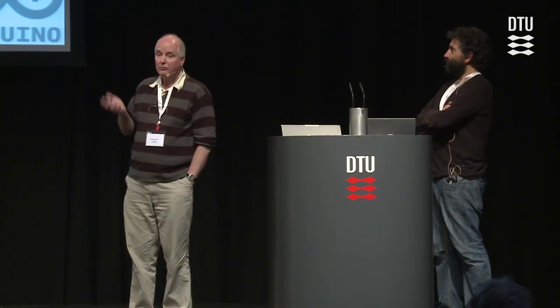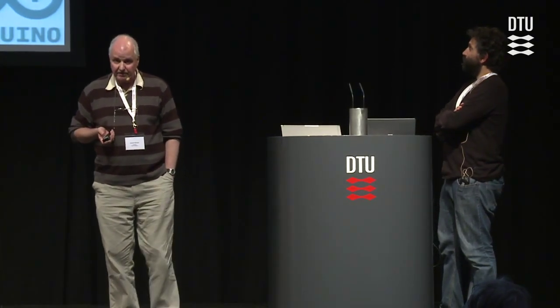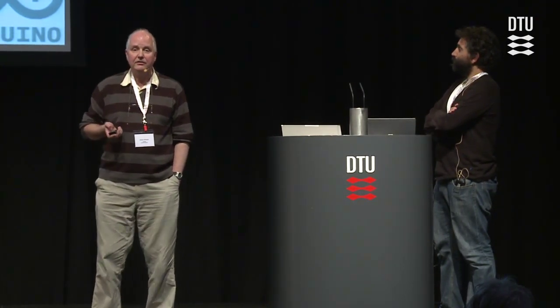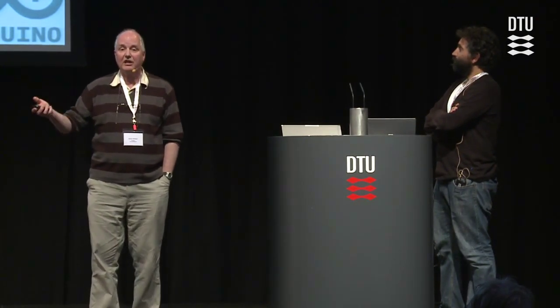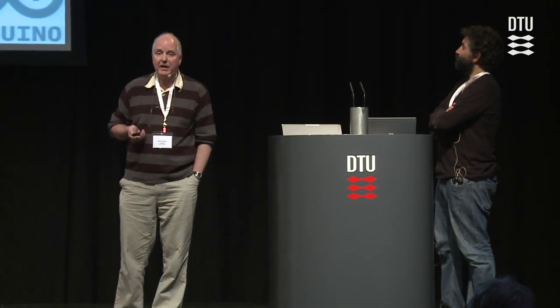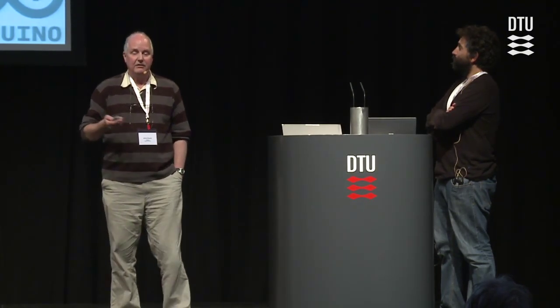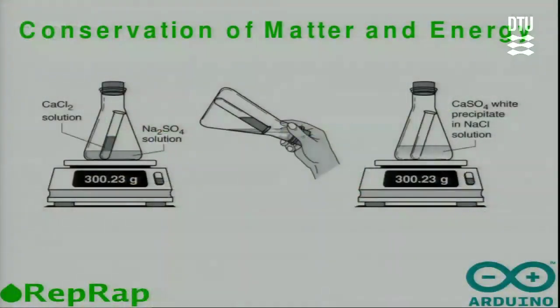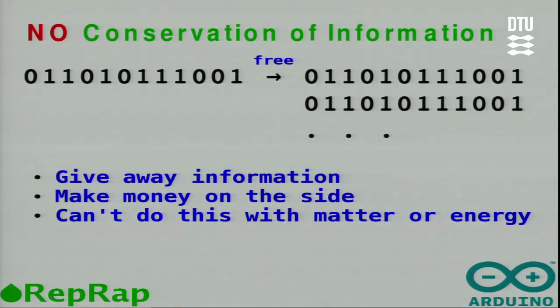Now let's look at that model when it comes to harder things than pure information. We're all aware of the conservation of matter and energy. You do a chemical reaction, and the result is different stuff than you started with, but it weighs exactly the same — that's the law of conservation of mass. We have a similar law for conservation of energy. In Einsteinian terms you can convert between the two, but they're still all conserved. But that doesn't quite hold for information.